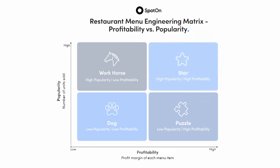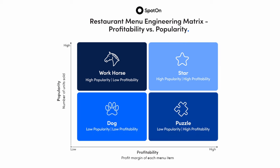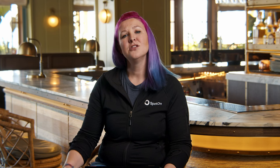As you take these items to rebuild your menu, look at those stars and make sure we highlight them, adjust those workhorses, adjust those puzzle pieces — and then how do we keep building profitability? Well, you have to replace those dogs somehow.